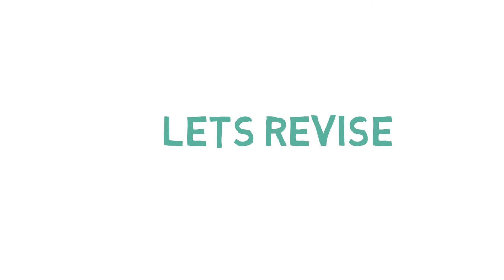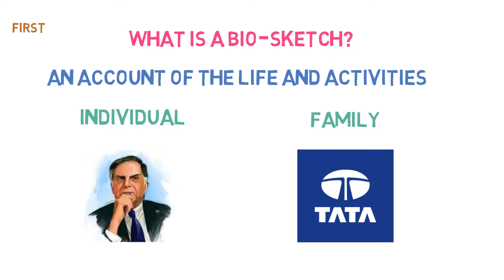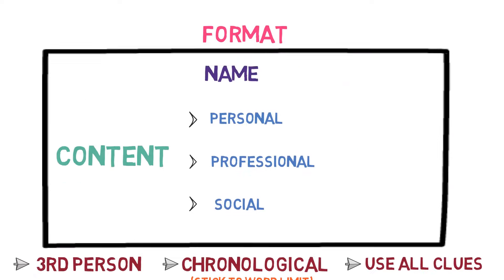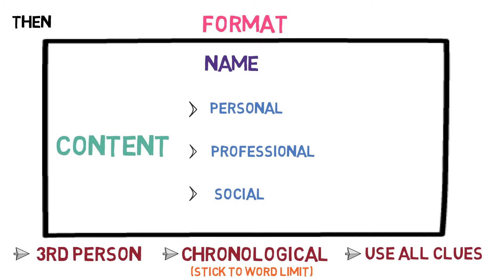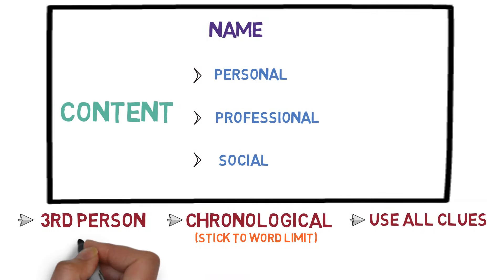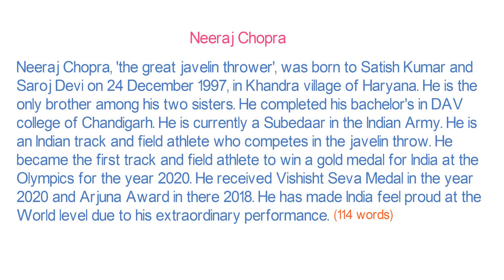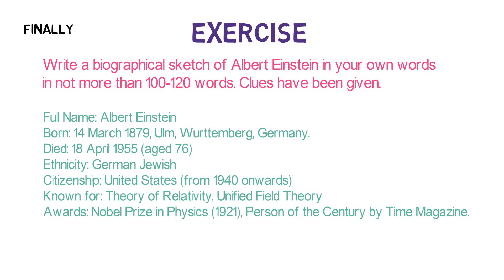Let's quickly revise what we learned in this lesson. First, we understood what is a biosketch — it is an account of the life and activities of an individual or family, including three key elements: personal life, professional life, and social life. Then, we learned the format of biosketch writing, which is divided into two parts: the name of the person, and the content — a summary of the person's life. While writing the content, remember the three key points. Finally, we understood the format with the help of an example, and I gave you an exercise to practice.